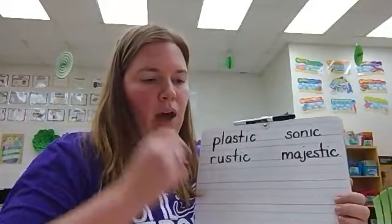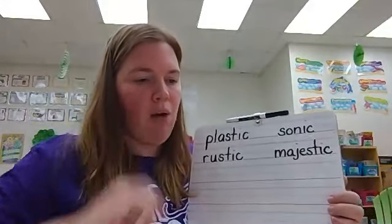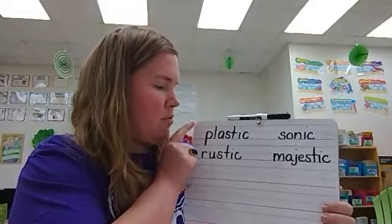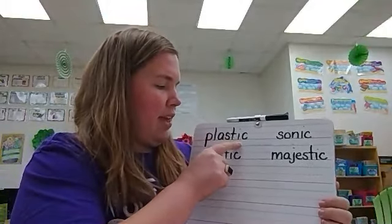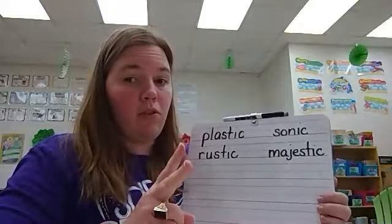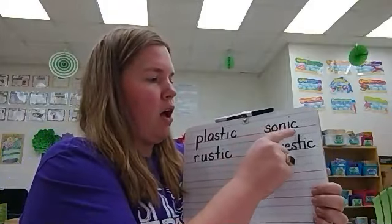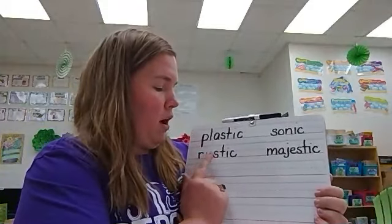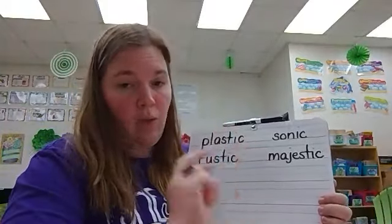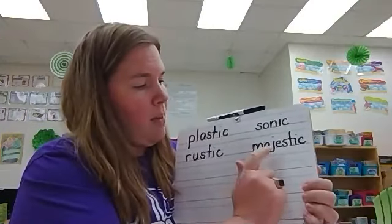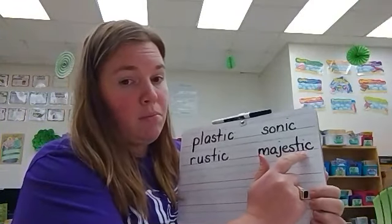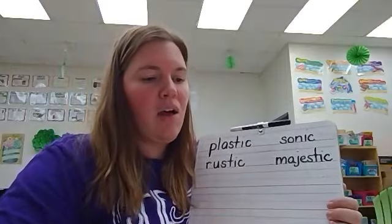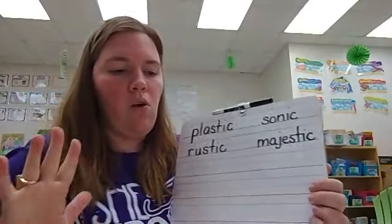Sometimes we can count the vowels to find out how many syllables a word has. We just clapped this out. Plastic — two vowels, two syllables. Sonic — two vowels, two syllables. Rustic — two vowels, two syllables. Majestic — three vowels, three syllables. So that rule works.